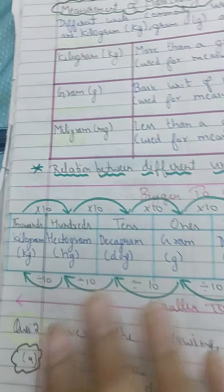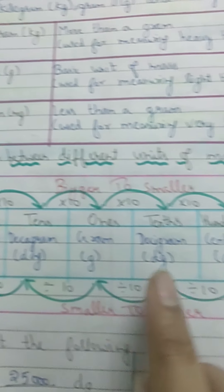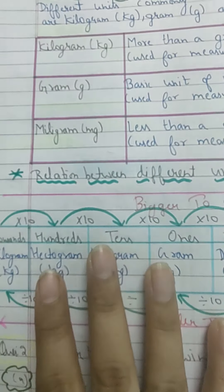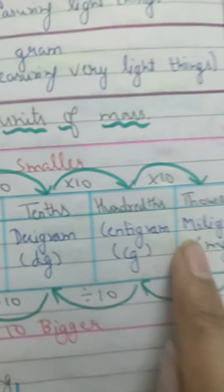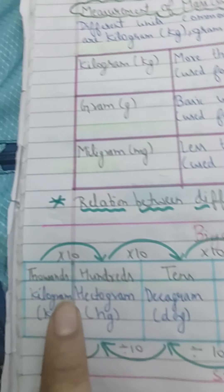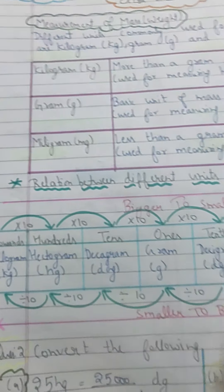Today we are going to learn more units of mass. We have: kilogram, hectogram, decagram, gram, decigram, centigram, milligram. As I told you earlier, the prefixes kilo, hecto, deca, deci, centi, milli remain the same — the word 'meter' is simply changed to 'gram'. The biggest unit is kilogram, the basic unit is gram, and the smallest unit is milligram.